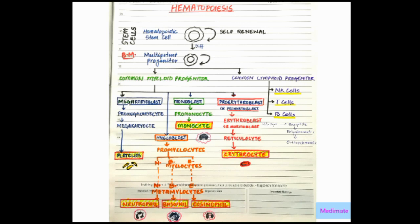Now let's look into the process. It begins with the hematopoietic stem cells. These cells have the ability to divide and form their own kind of cells, which is called self-renewal.